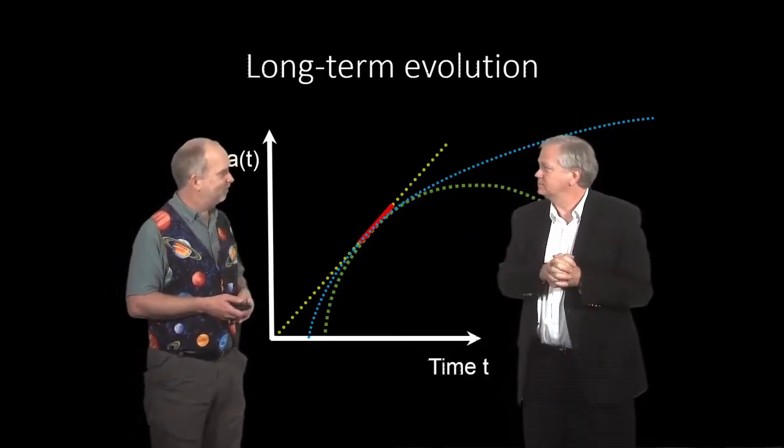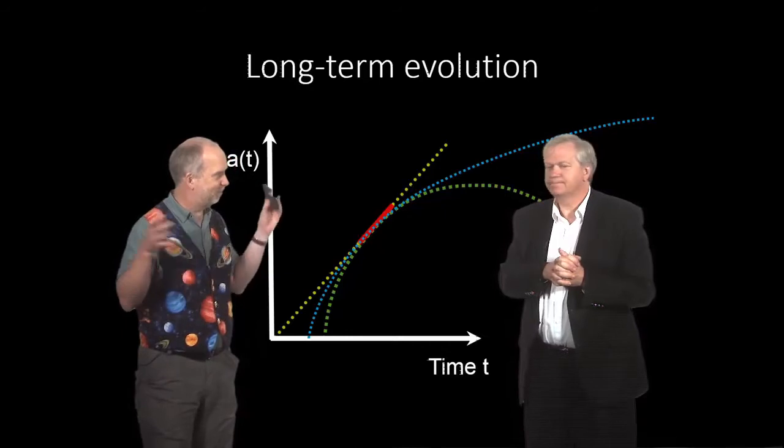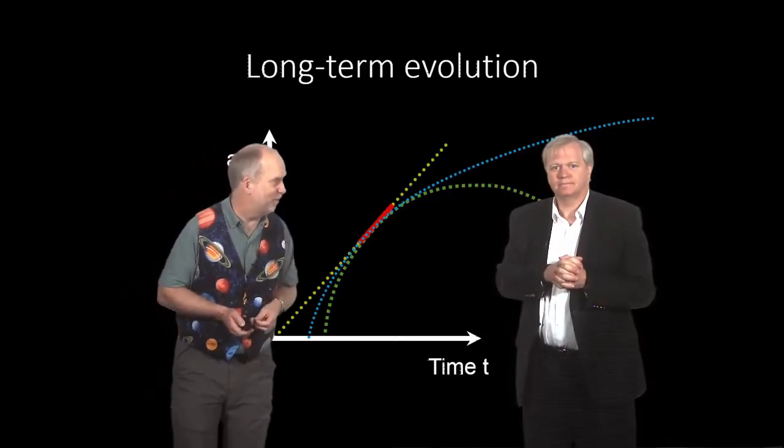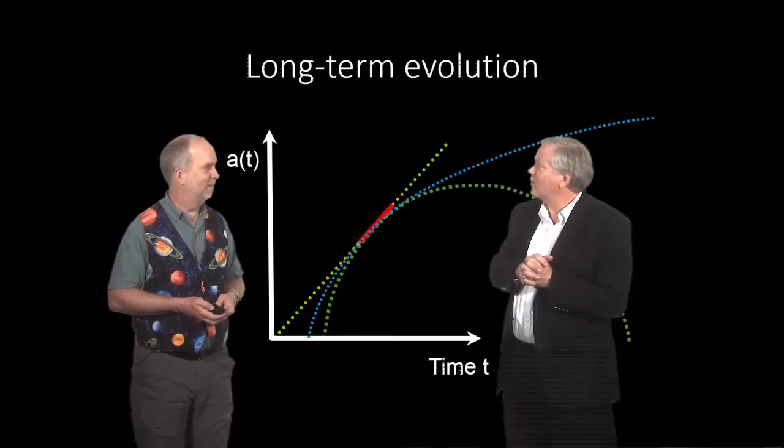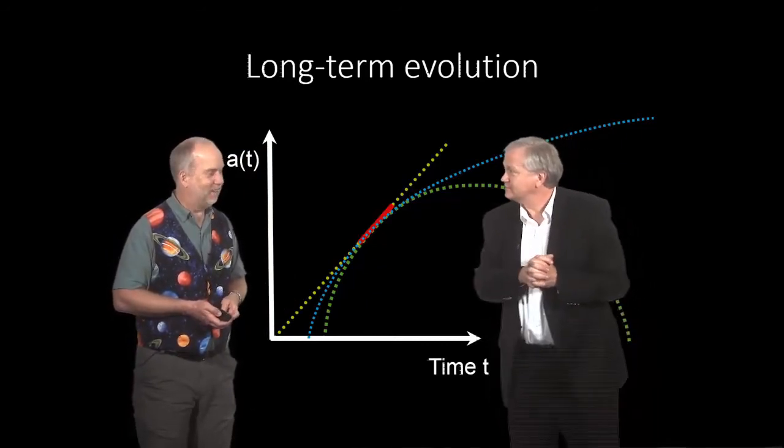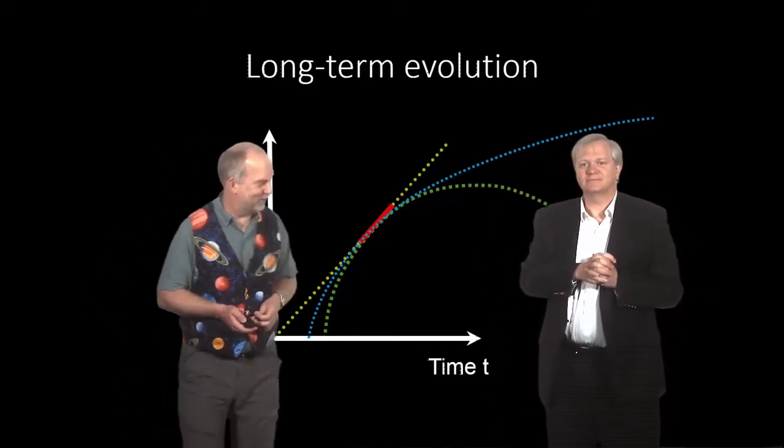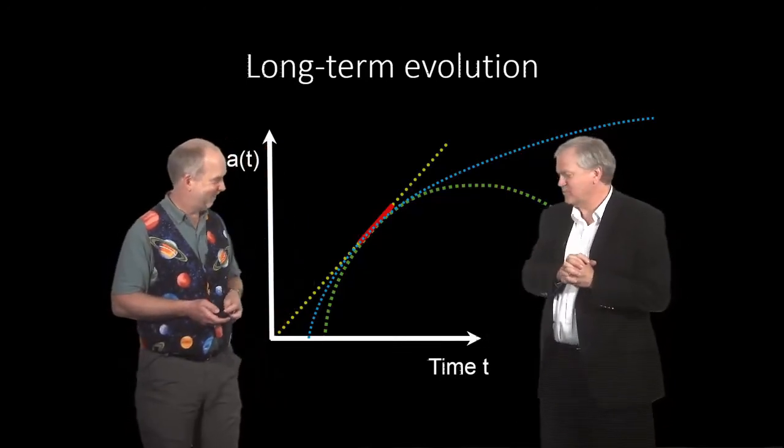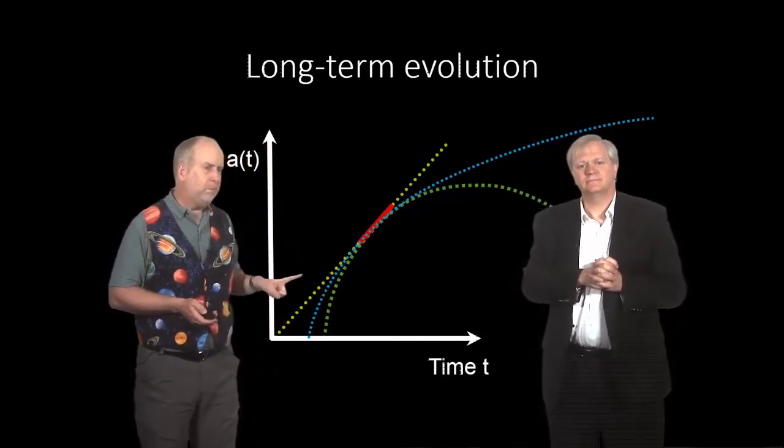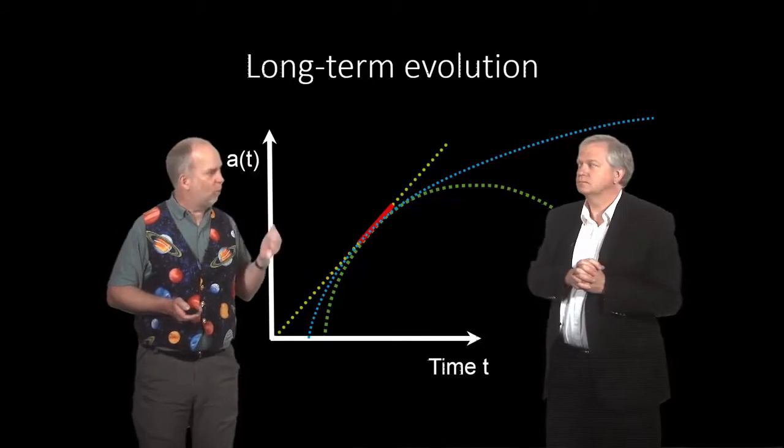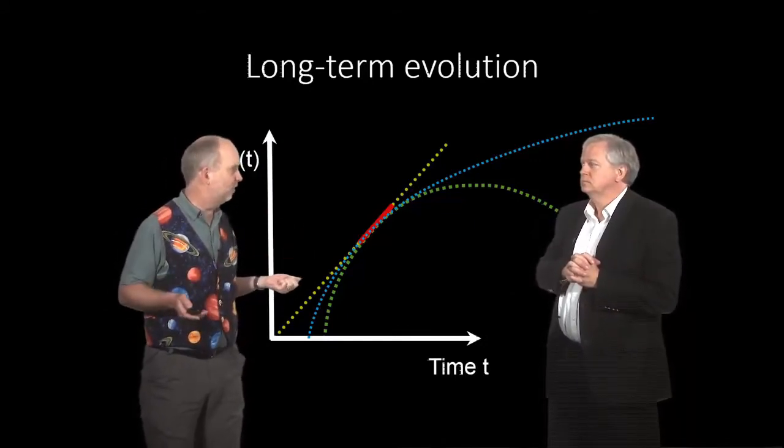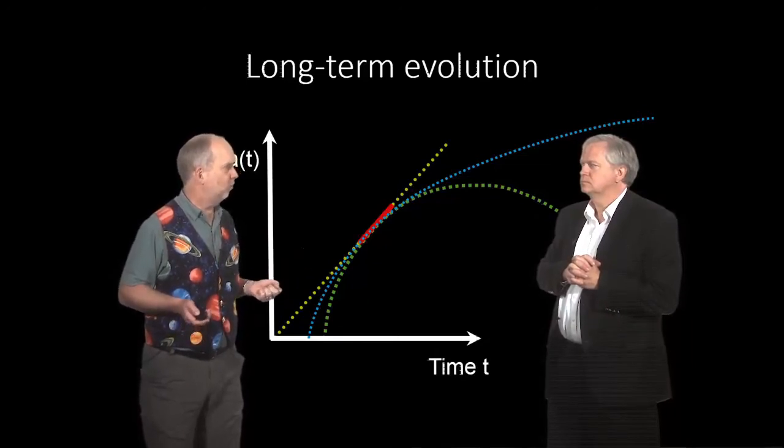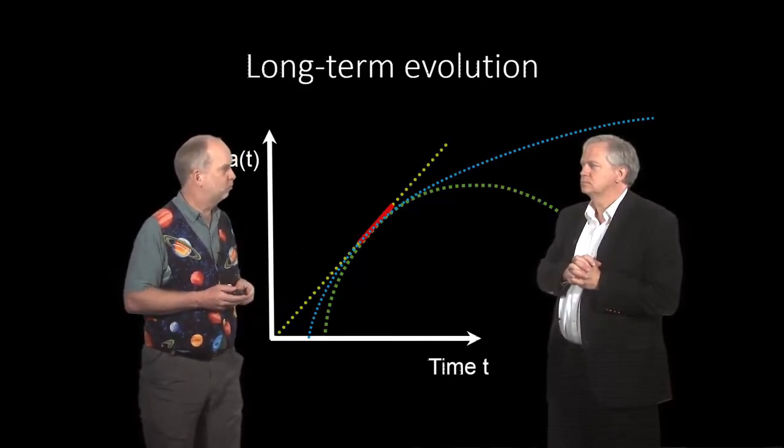Well, that would be nice, but unfortunately no one's put gigantic megaparsec scale clocks on all the supernovae and galaxies out there. But we could use distance, because if you know how far away something is, then if it's a hundred light years away, the light's been traveling a hundred years. If it's a million light years away, the light's been traveling a million years. So if you know the distance, then we know how long the light's been traveling.